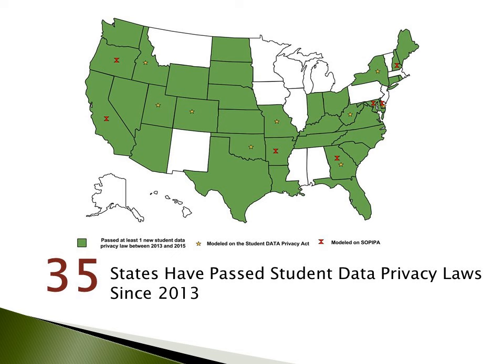We also saw a lot of conflation between student data and worries about Common Core State Assessments and Common Core Standards. There was also this amorphous idea of the cloud — what is this really hypothetical concept that so many of us are giving our data to? There was a real lack of information about what this meant and about how protected student data really was. Since 2013, 35 states have passed student data privacy laws, and there have been 338 bills introduced in 49 states just since the beginning of 2014.